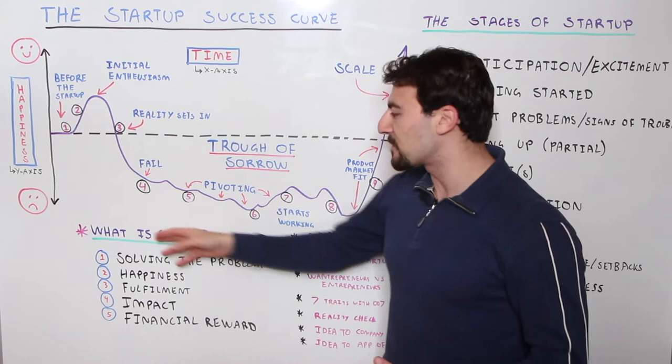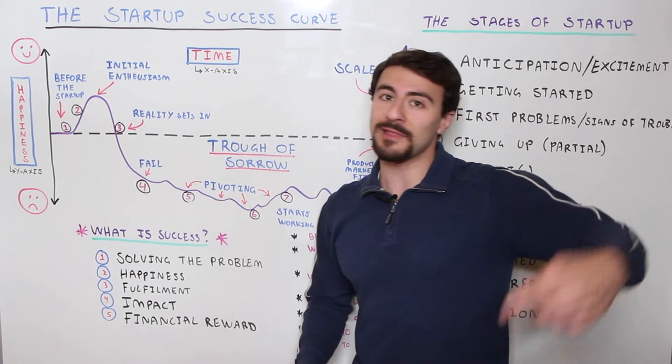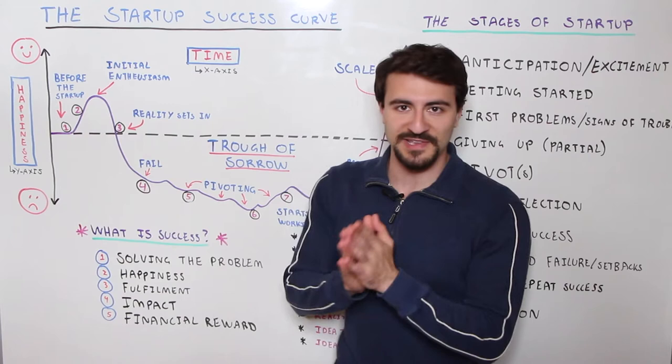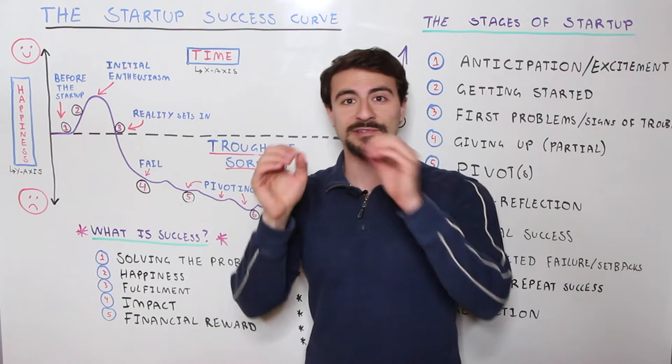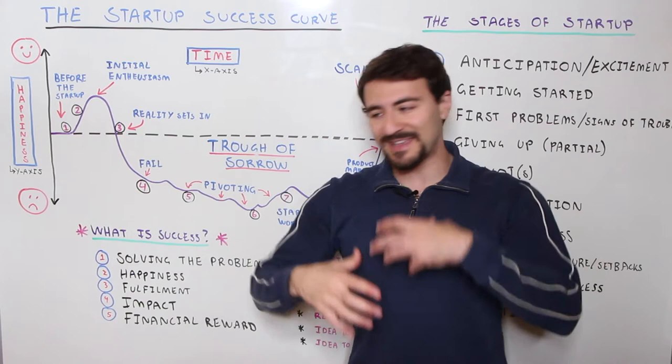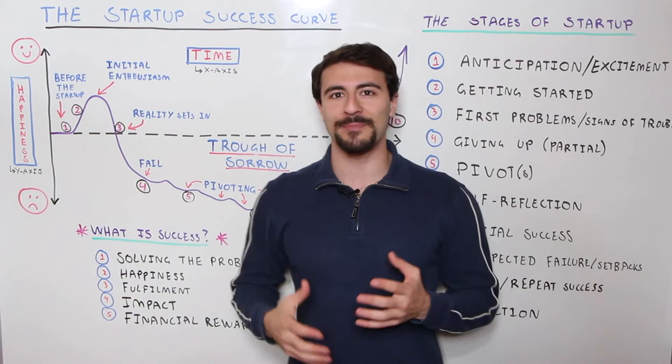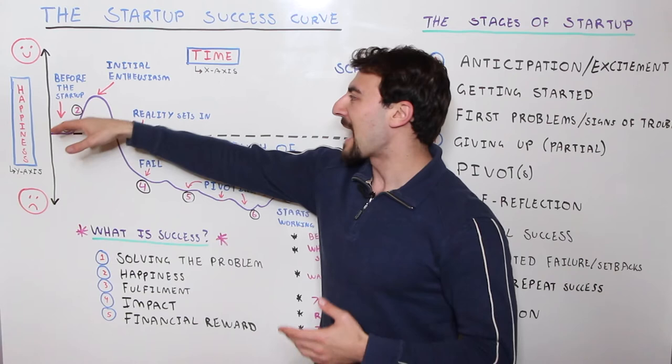Step number one in the startup success curve is anticipation and excitement before you even get started. If we set your happiness level at neutral — that's your zero, your base level — at point one you have the anticipation, the excitement, you're about to start something. Maybe it's anxiety, maybe it's excitement, maybe it's worry. You're about to do something but you haven't done anything yet. That's step one before you even do anything.